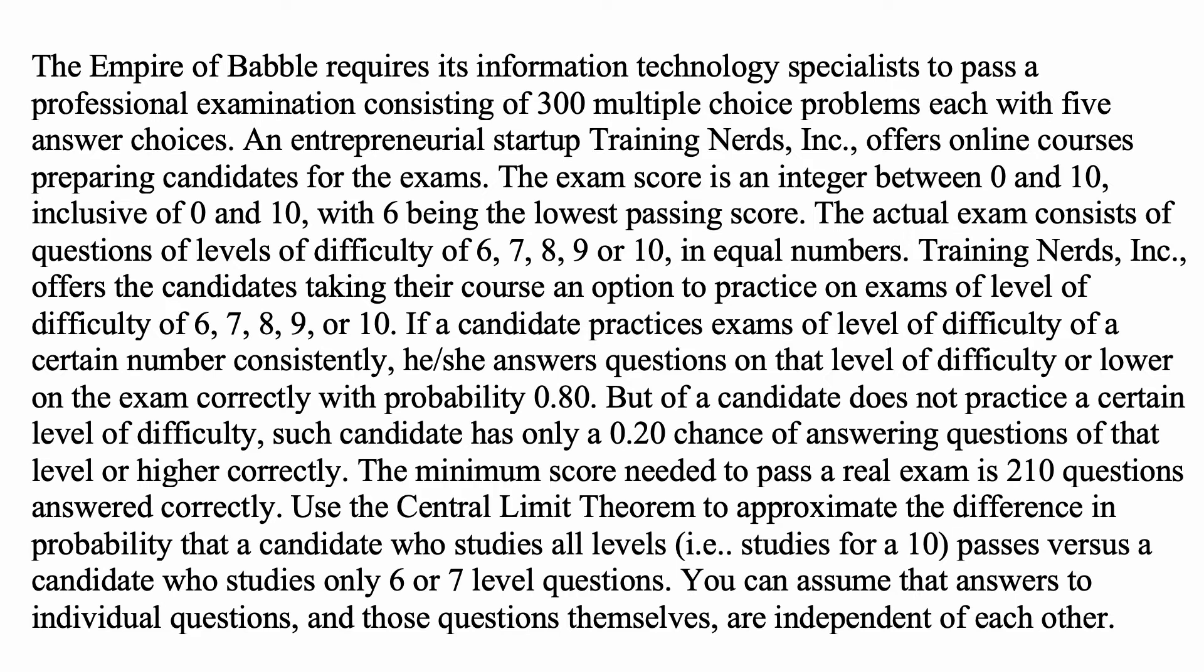Training Nerds Incorporated offers the candidates taking their course an option to practice on exams of level of difficulty of 6, 7, 8, 9, or 10. If a candidate practices exams of level of difficulty of a certain number consistently, he or she answers questions on that level of difficulty or lower on the exam correctly with probability 0.8. But if a candidate does not practice a certain level of difficulty, such candidate has only a 20% or 0.20 chance of answering questions of that level or higher correctly.